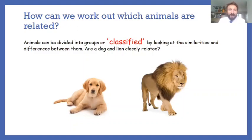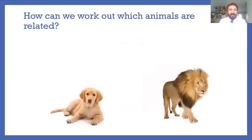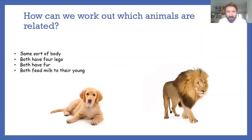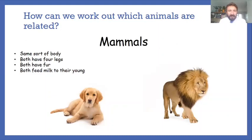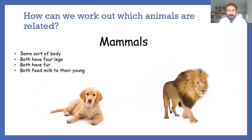So you're back already. Now the question was, are a dog and a lion closely related? Well, let's take a look. If we're going to have a look at them, well they've both got the same sort of body, both got four legs, both got fur, and they both feed milk to their young. So these two animals are in fact actually mammals. These two animals are closely related and they can be grouped together.